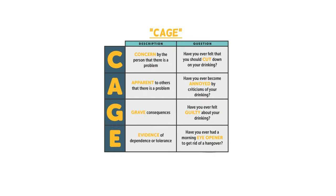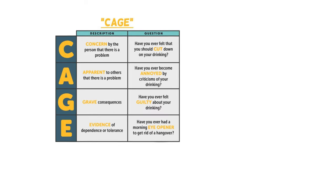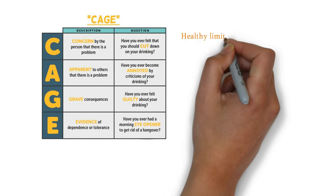The CAGE questionnaire: C — Have you ever felt you should cut down your drinking? A — Have you ever become annoyed by criticism of your drinking? G — Have you ever felt guilty about your drinking? E — Eye opener: have you ever had a morning eye opener drink to get rid of a hangover?